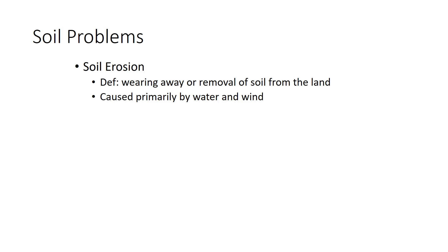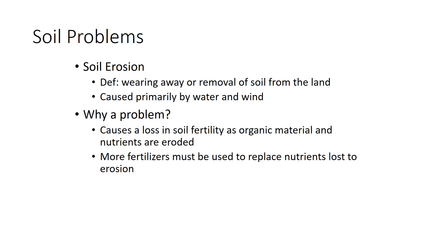Erosion — you guys should know what that means — it's just the gradual wearing away. The term soil erosion refers to taking those top layers of soil, the A and the O horizon, and allowing the wind and rain to slowly wash that away so that we're left with less beneficial horizons. It's a problem because we rely on healthy fertile soil to grow our food. It's also important for habitats and so on.